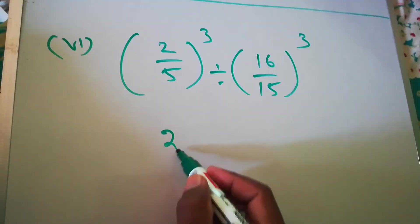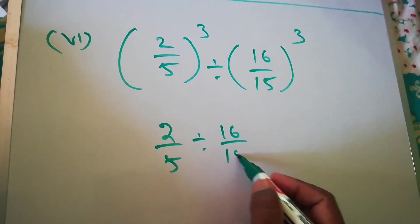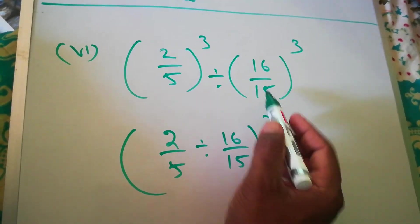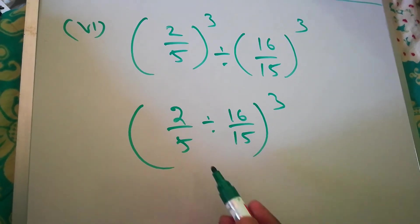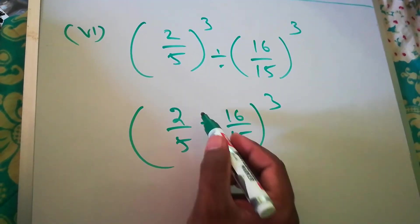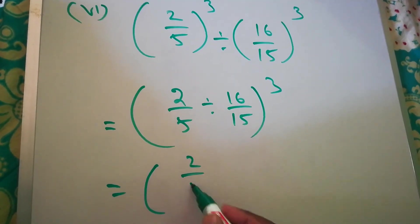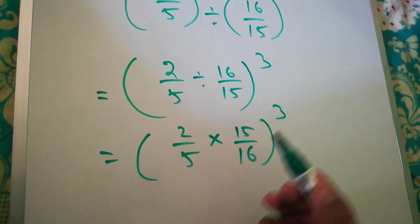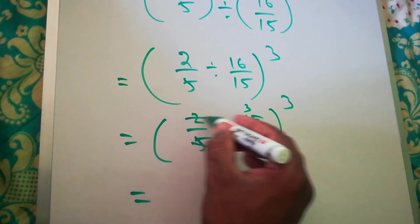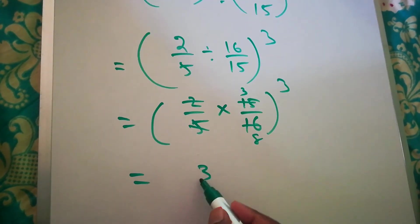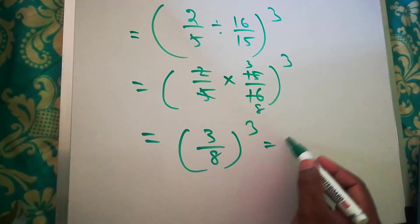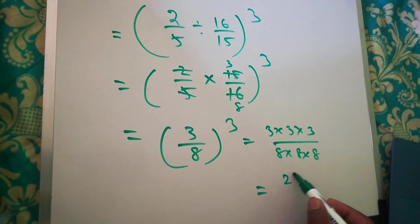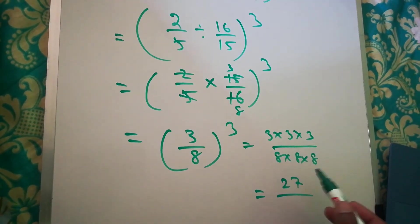Same process: (2/5)^3 divided by (16/15)^3. Same power, so we handle the division: change division to multiplication and take the reciprocal of 16/15, getting (2/5 × 15/16)^3. Cancel: 5 and 15 give 3; 2 and 16 give 8. So (3/8)^3 = 3×3×3 over 8×8×8 = 27/512.